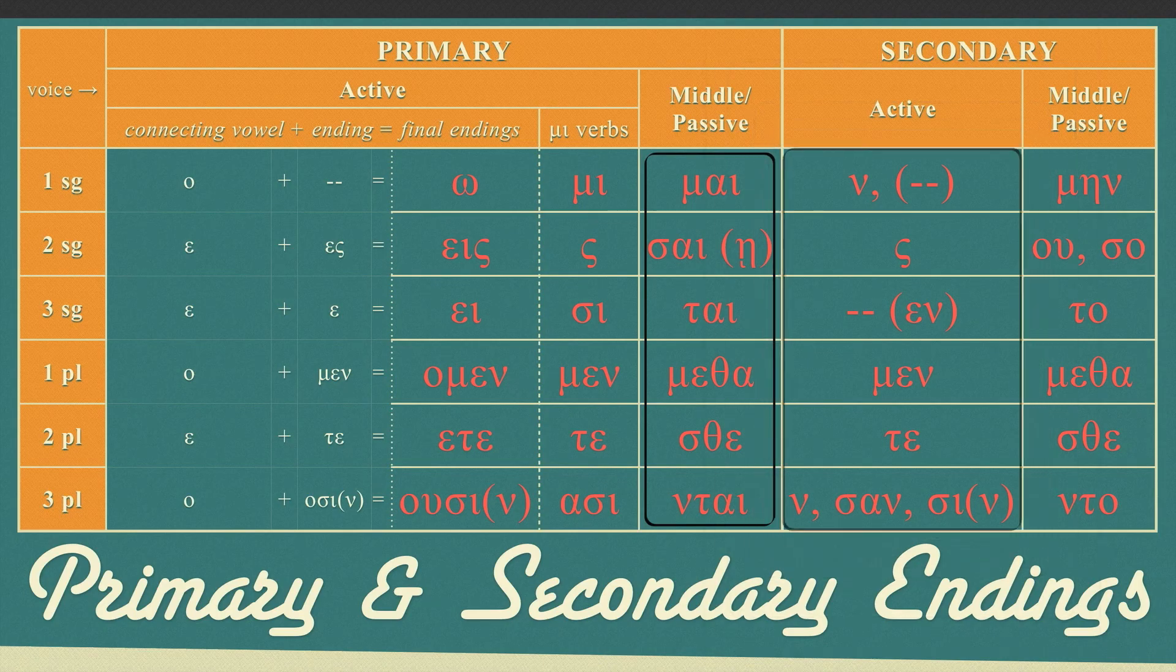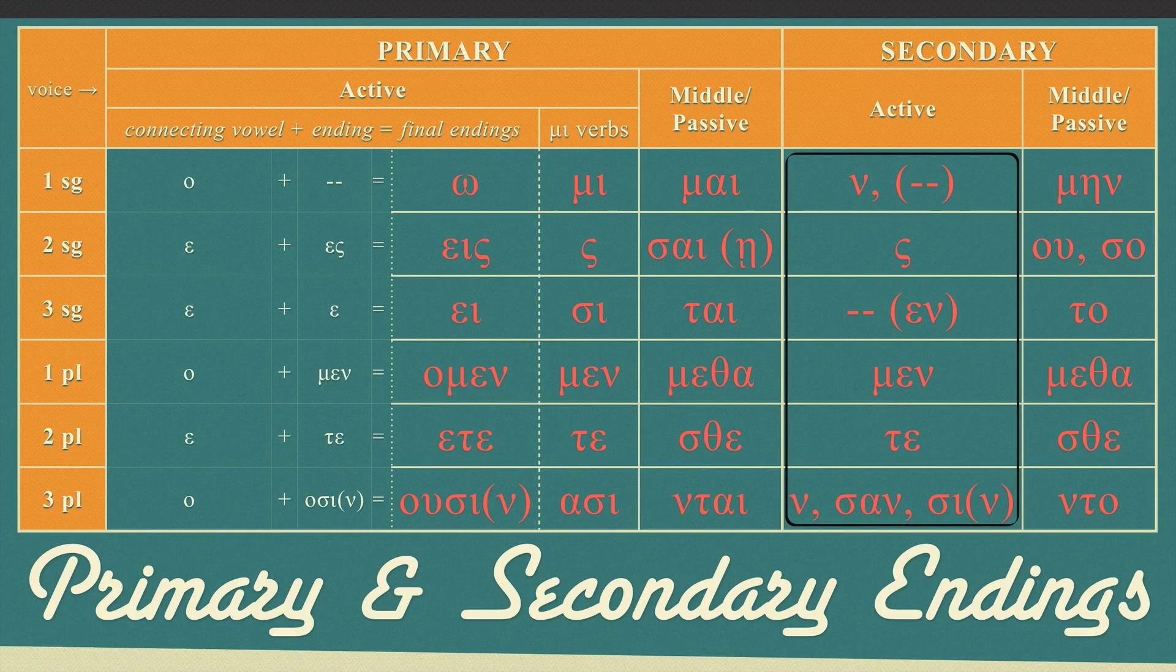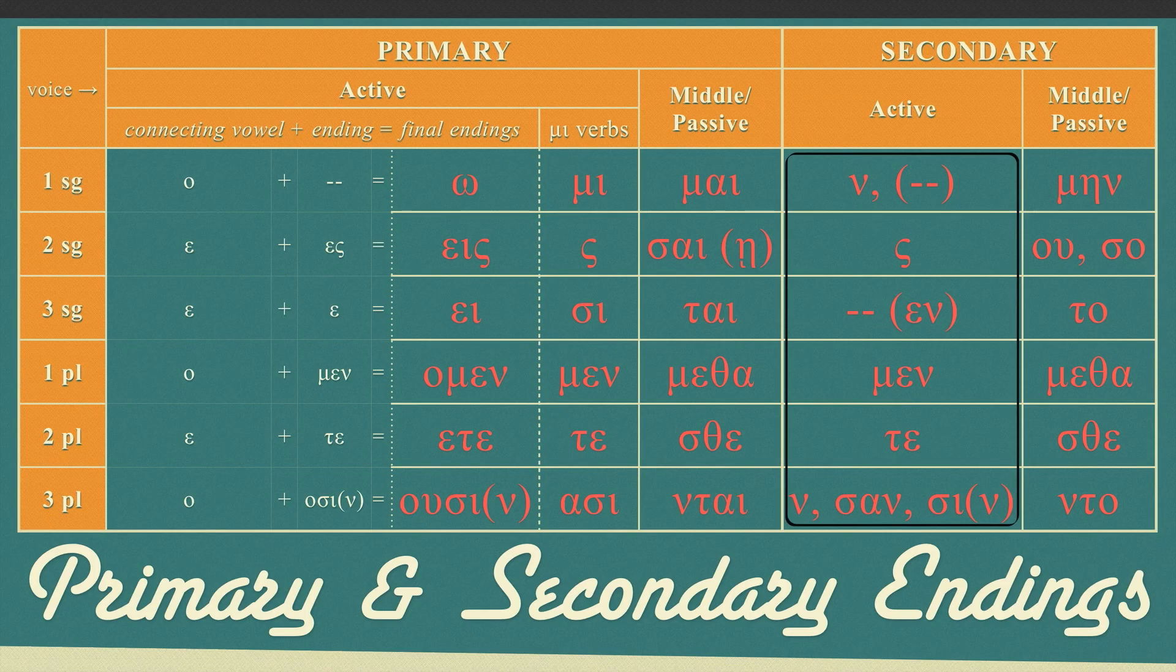Secondary active endings are NEW, SIGMA, NOTHING, and the NOTHING can end up looking like N because of a movable NEW which is often added to the end of the word. Then MEN, TE, and then NEW, SAN, or SI.